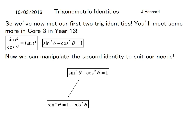Now we can manipulate the second identity to suit our needs. So from there you can split it into two: you can call any sin²θ in the world one minus cos²θ of the same theta, because I've just took that over the other side. And similarly you can do the same and call cos²θ equals one minus sin²θ.